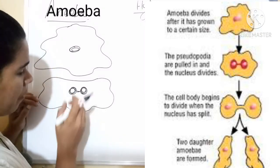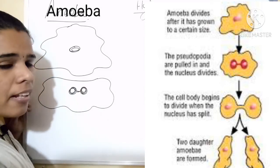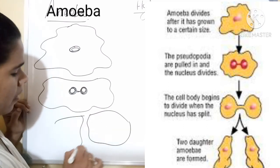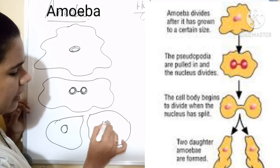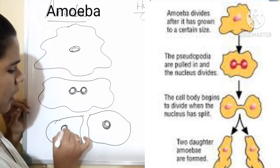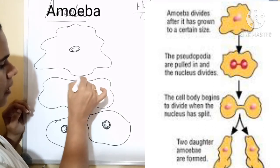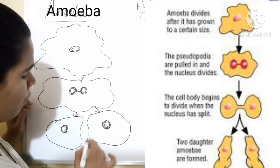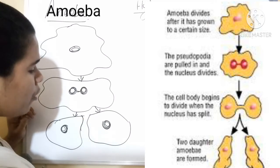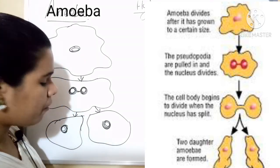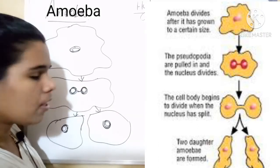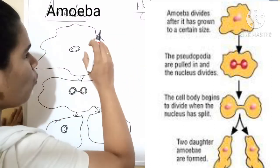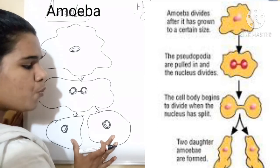The nucleus divides into two first. Along with the nuclear division, the body parts also divide into two. Each body then consists of one nucleus. So the single nucleus divides into two, and after the nuclear division the body also divides into two, forming two new individuals.